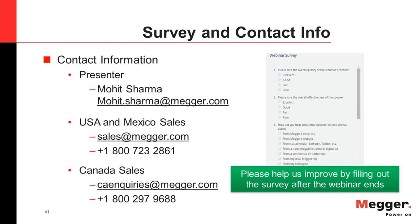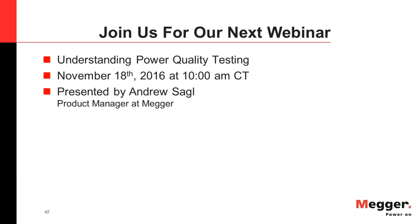First Q&A question: Can Failure to Trip also be due to a stuck breaker? According to IEEE C37.119, a stuck breaker refers specifically to Failure to Close — the breaker is not able to close. However, from a general English/dictionary perspective, if the breaker is mechanically stuck and unable to open, that would indeed be a Failure to Trip.